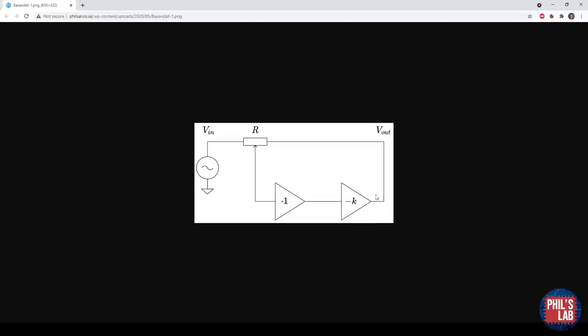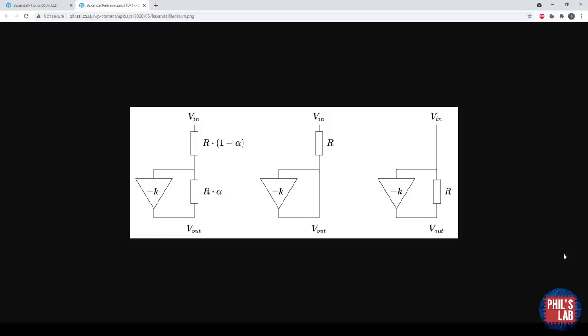It consists of a linear taper potentiometer of total resistance R, a unity gain and high impedance buffer over here, and an inverting amplifier of gain K. In this form it is a bit hard to see how the volume control functions, so let me redraw it in a more convenient form which is that of a potential divider.